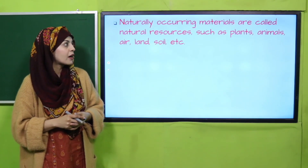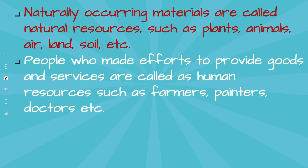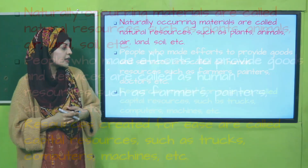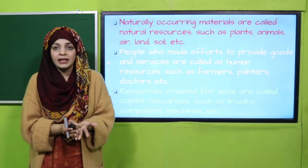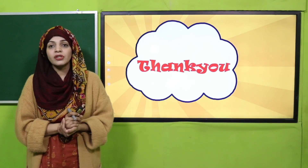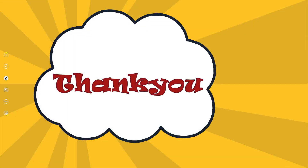For the wrap-up: naturally occurring materials are called natural resources, such as plants, animals, air, land, and soil. People who make efforts to provide goods and services are called human resources, like farmers, doctors, teachers, etc. Resources created by humans to make life easier are called capital resources. I hope you enjoyed the project. Keep everybody around you safe, have a good day, thank you, and Allah Hafiz.